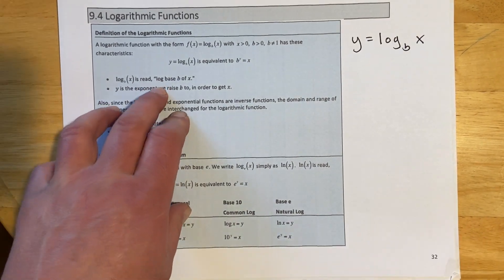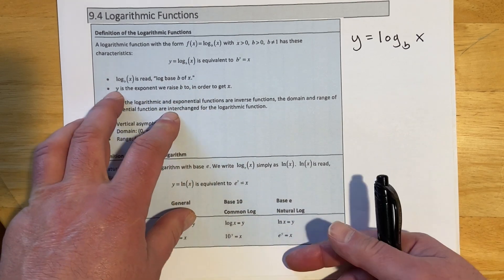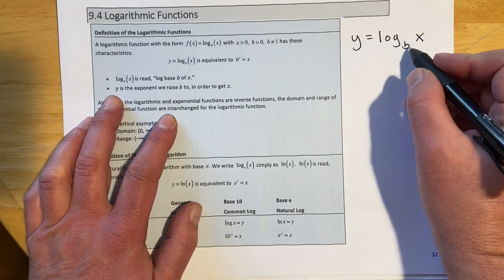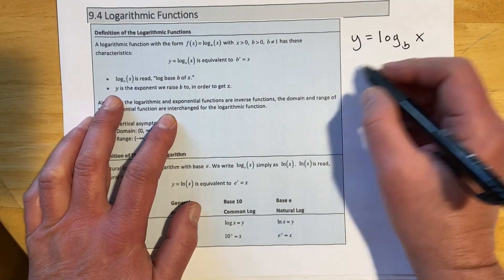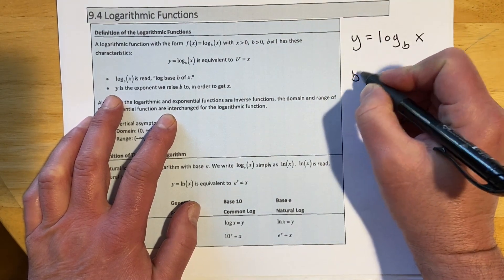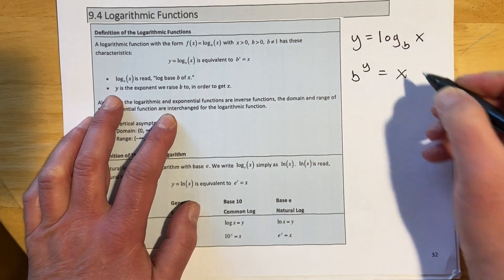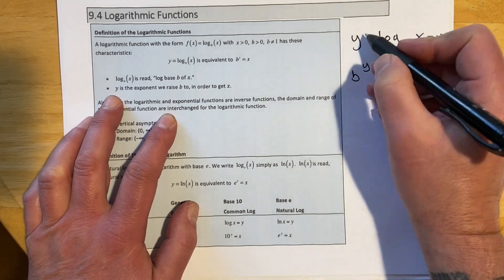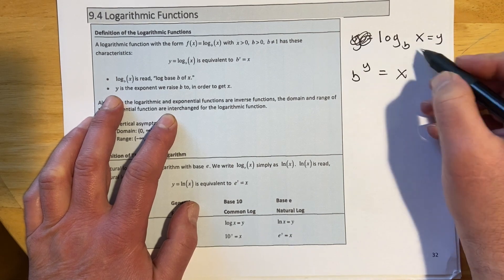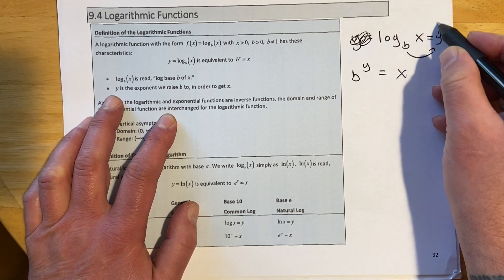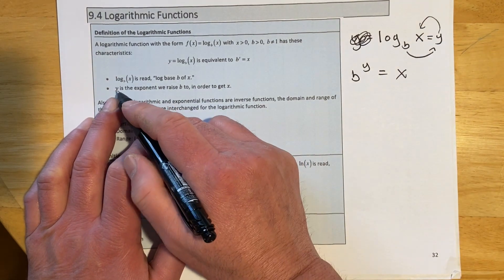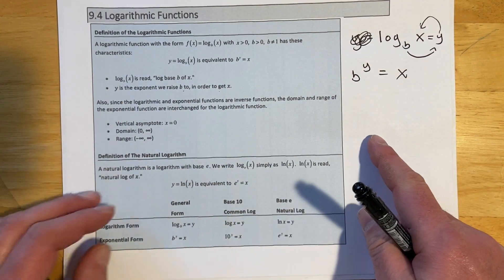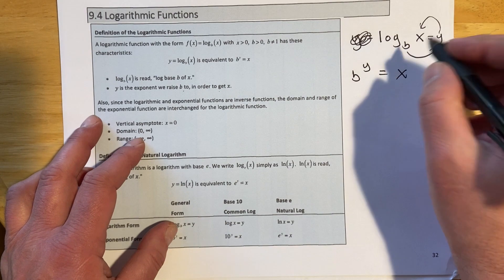Log base b of x is read 'log base b of x,' and this is equivalent to the statement b raised to the y equals x. I prefer to write the y on that side — y is the exponent we raise b to in order to get x.